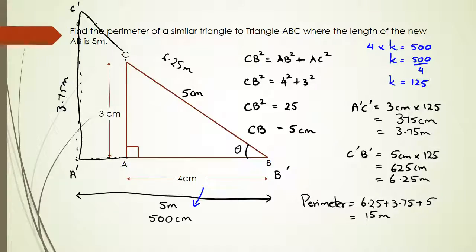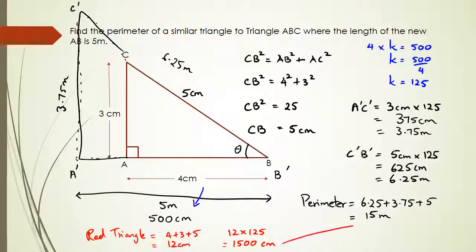So for the new version, we've got 6.25 meters and 3.75 meters as the sides. The perimeter of the new shape is 6.25 plus 3.75 plus 5, and that gives us 15 meters. The other way you could have done it is by calculating the perimeter of the red triangle first: 4 plus 3 plus 5 equals 12 centimeters. If you're going to make the triangle bigger by a scale factor of 125, the perimeter also increases by that scale factor, which means that equals 1500 centimeters — the same as 15 meters.